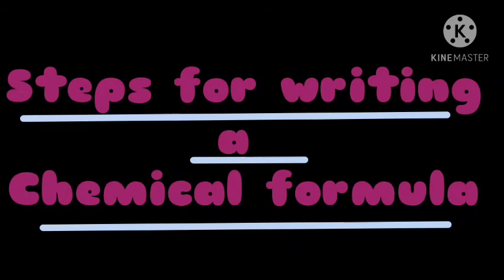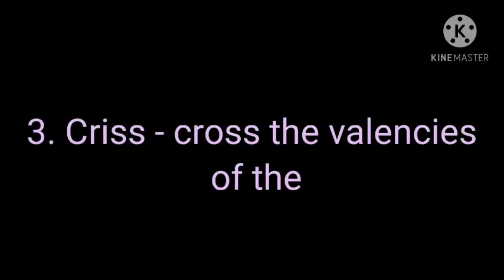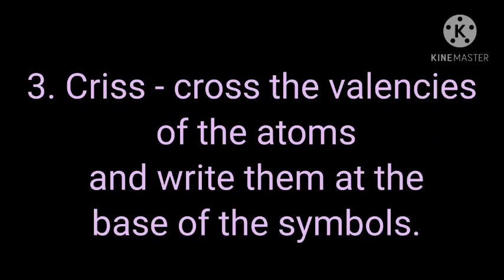Let us discuss them. First, write the chemical symbols of the constituent elements present in that compound. Second, write the valency of each element below its symbol. Third, crisscross the valencies of the atoms and write them at the base of the symbols.